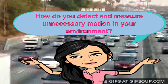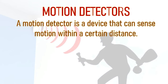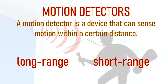How do you detect and measure motion in your environment? We have motion detectors. A motion detector is a device that can sense motion within a certain distance. It can be classified as long-range or short-range.